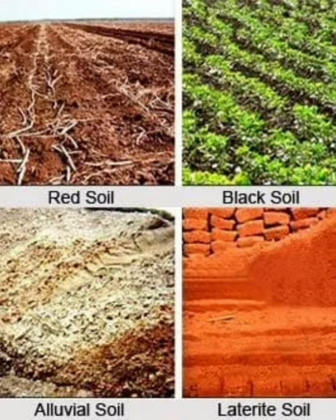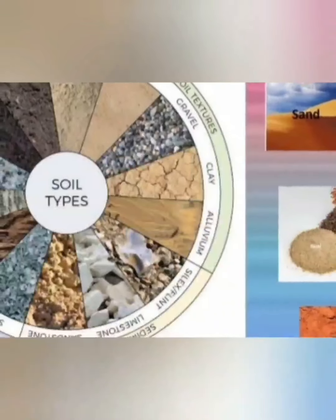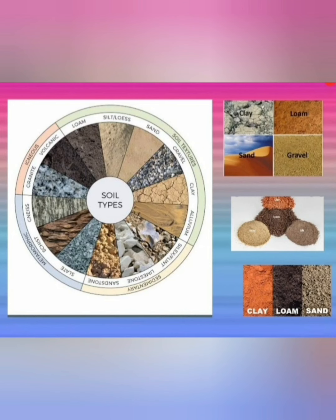The types of soil include alluvial soil, black soil, red and yellow soil, laterite soil, desert soil, saline soil, peaty soil, and forest soil.